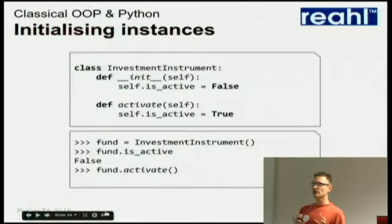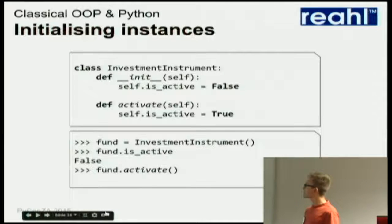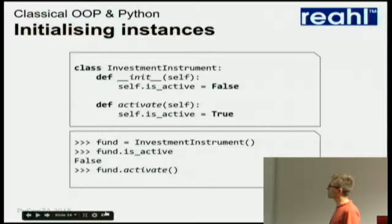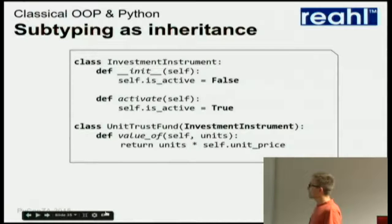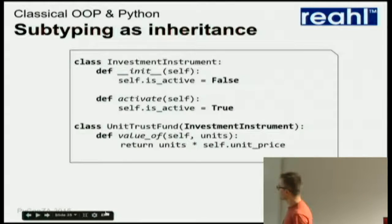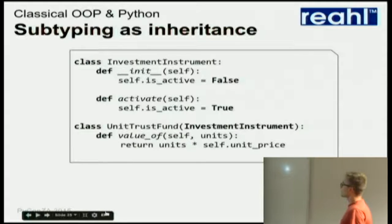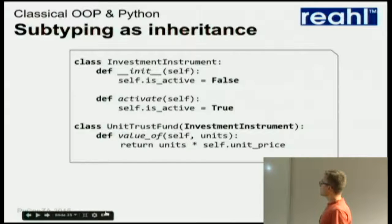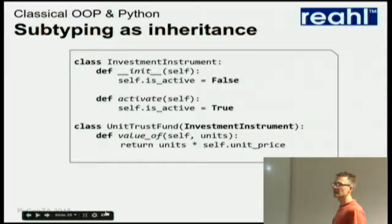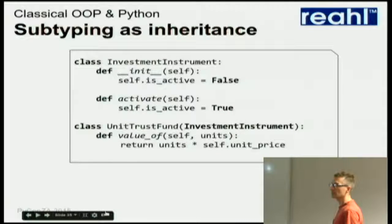Especially where you use classes as cookie cutters, you would like your instances to be properly initialized and whole once they're created. That's what the init method is for — it gets called automatically when you create stuff. For subtyping, we have a quite limiting implementation called inheritance. If this class inherits from that class, it just means that all of those methods could just as well have been defined here too — it gets all of those methods. It's not quite the same thing as we would mean with a conceptual model where we say the definition applies to this as well, but this is how we can map it to code. We can do things like ask, is it an instance? And see that a unit trust fund is an instance of InvestmentInstrument as well.